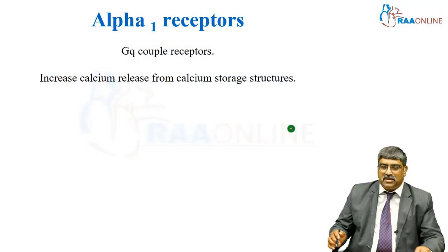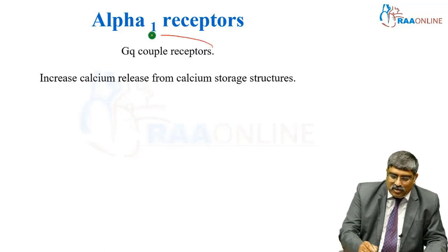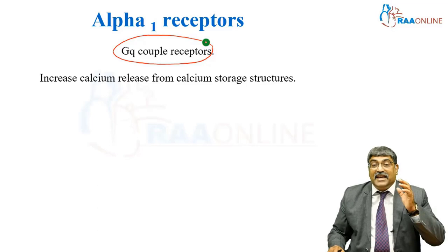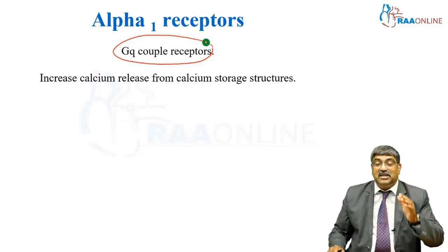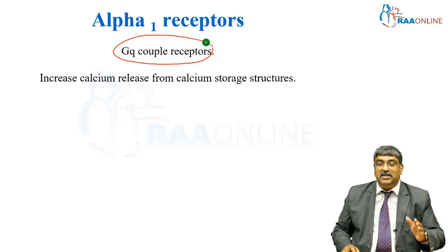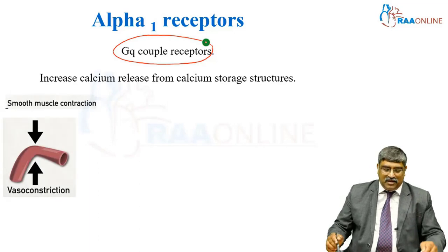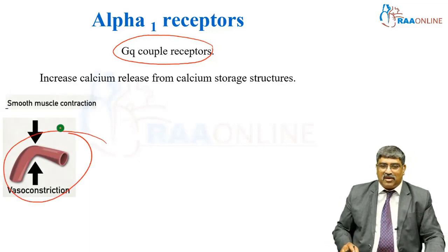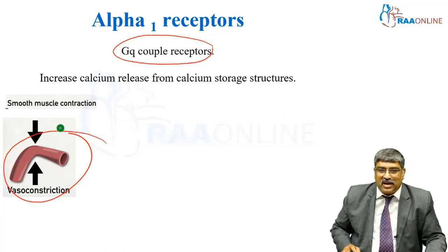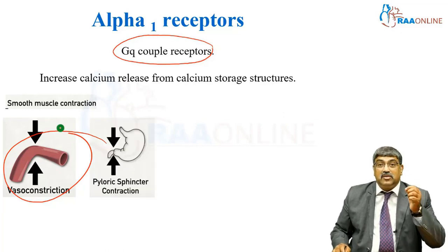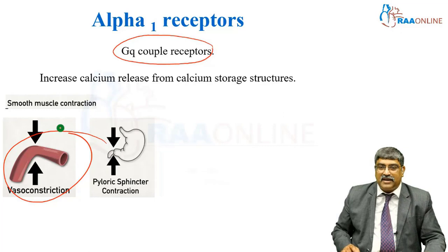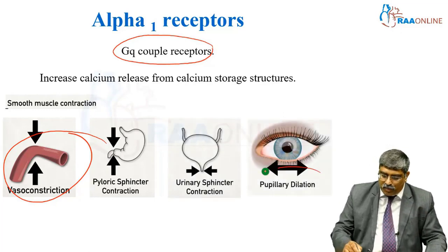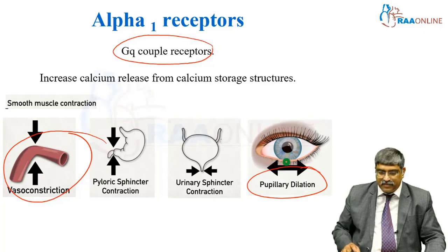Alpha-1 receptors act through a GQ-coupled receptor. It increases the calcium release from calcium storage structures. This causes peripheral vascular muscle contraction leading to vasoconstriction. It can also cause pyloric sphincter contraction, urinary sphincter contraction, and pupillary dilatation.